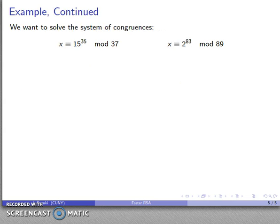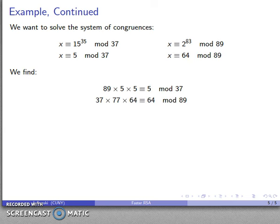So at this point, I can use the Chinese remainder problem algorithm and solve this system of congruences. And it turns out that 15 to the power 35, that reduces to 5, 2 to the power 83, reduces to 64. So I can solve this system of congruences. I'm looking for something that's congruent to 5 mod 37 and 64 mod 89.